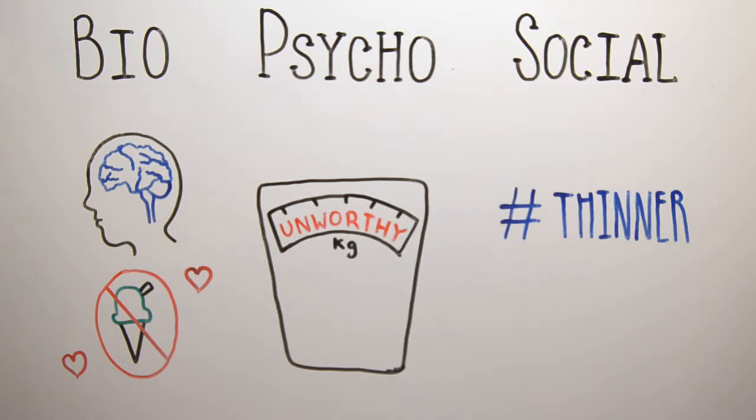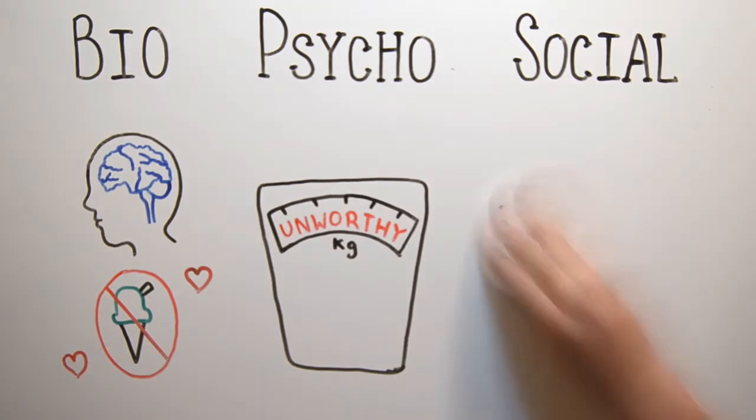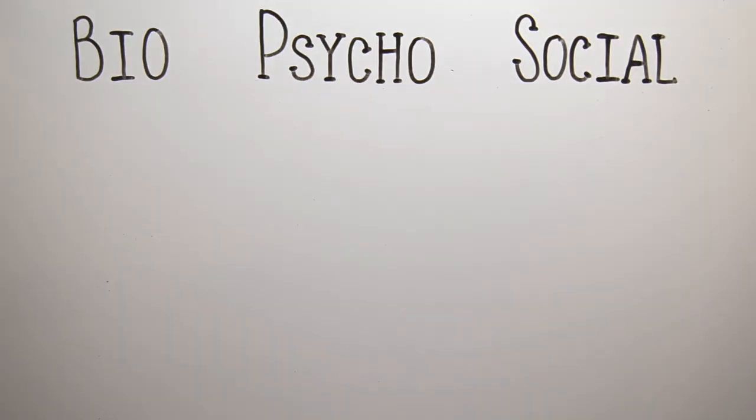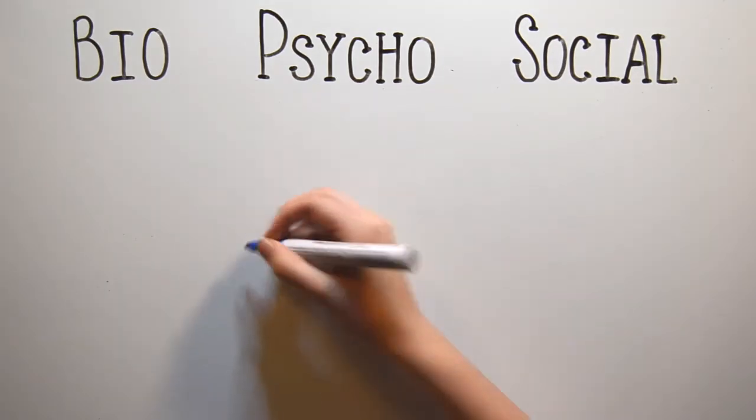When someone with anorexia sees an Instagram post of an impossibly thin model, a magazine cover, or maybe hears a comment about somebody's weight – this happens pretty often, right – it can raise their anxiety. Not eating can become a way for some people to alleviate or control that anxiety. It's easy to see how a number of different factors can work together, not only to increase the risk of anorexia for some people, but also to keep it around.